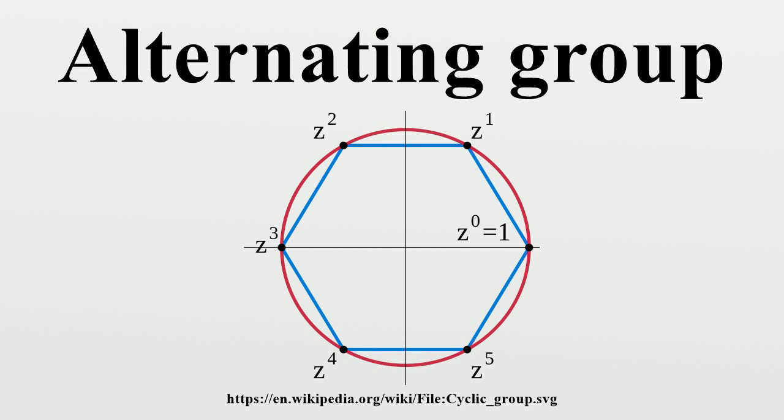So they must map to the same element in the abelianization, since conjugation is trivial in abelian groups. Thus a three-cycle like (1 2 3) must map to the same element as its inverse (1 3 2), but thus must map to the identity, as it must then have order dividing both two and three. So the abelianization is trivial.